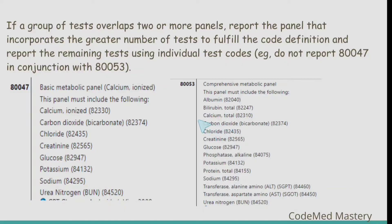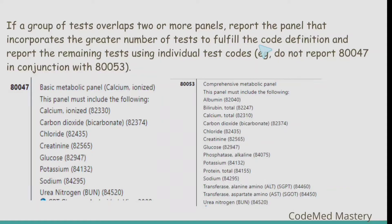The tests mentioned in 80047 — calcium ionized, carbon dioxide, chloride, creatinine, glucose, potassium, sodium, urea nitrogen — are all included in 80053. If a group of tests overlaps two or more panels, report the panel that incorporates the greater number of tests to fulfill the code definition, and report the remaining tests using individual test codes. Do not report 80047 in conjunction with 80053.